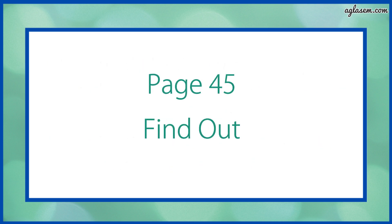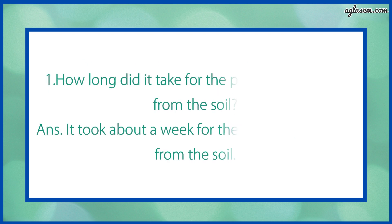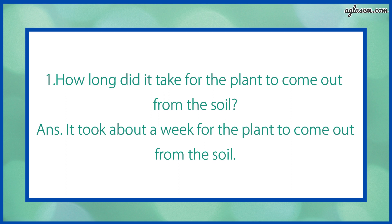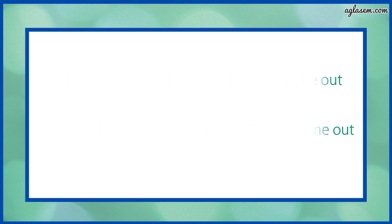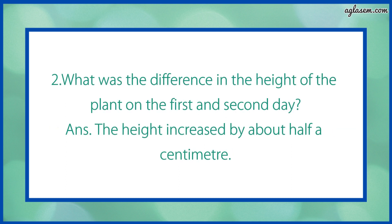Now turn to page number 45. Find out. Question number 1 says: how long did it take for the plant to come out from the soil? Answer: it took about a week for the plant to come out from the soil. Second question says: what was the difference in the height of the plant on the first and the second day? Answer: the height increased by about half a centimeter.